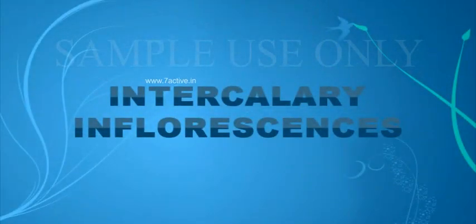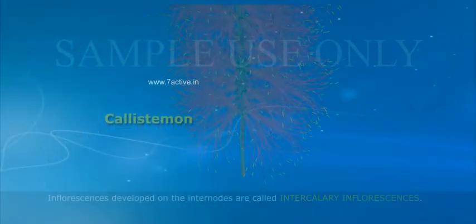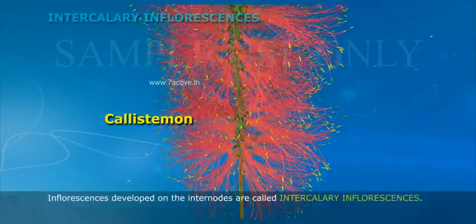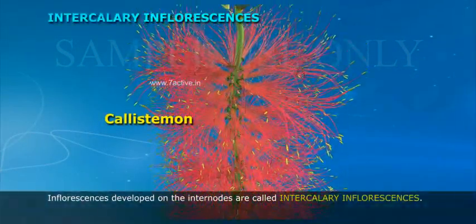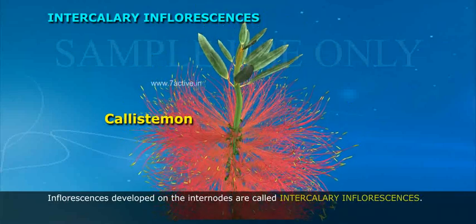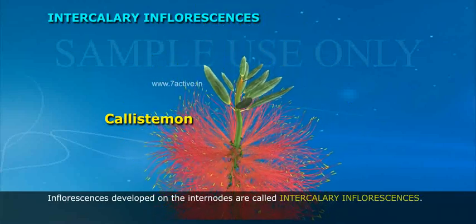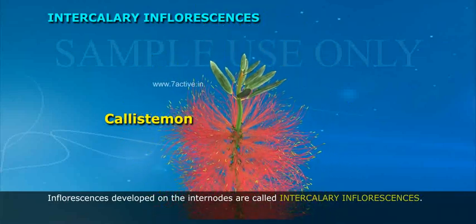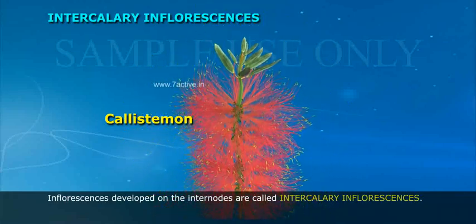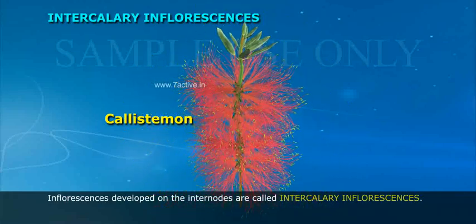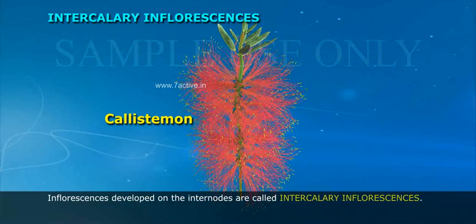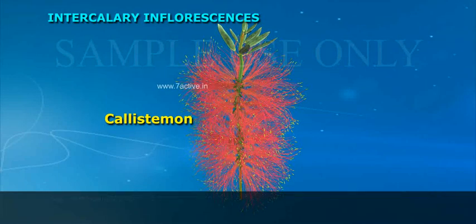Intercalary inflorescences: Inflorescences developed on the internodes are called intercalary inflorescences. Example: Callistemon.